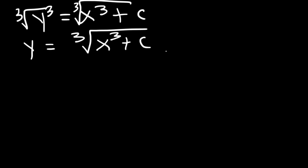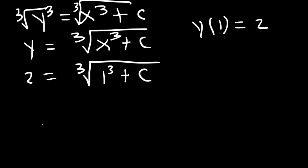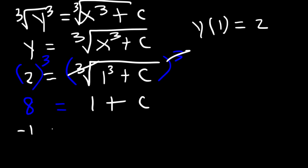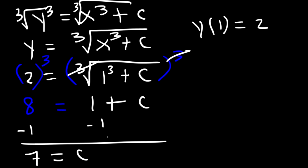Now let's say if we want to find a particular solution. If we're given an initial condition, let's say y of 1 is equal to 2. If you're given a point — an x and y value — you need to solve for c. So y is equal to 2 and x is equal to 1. In order to get c by itself, we need to raise both sides to the third power. 2 to the third is equal to 8. The cube of a cube root cancels and it's just going to be 1 plus c. So we can see that 7 is equal to c.